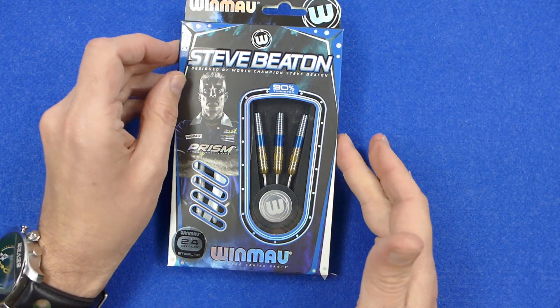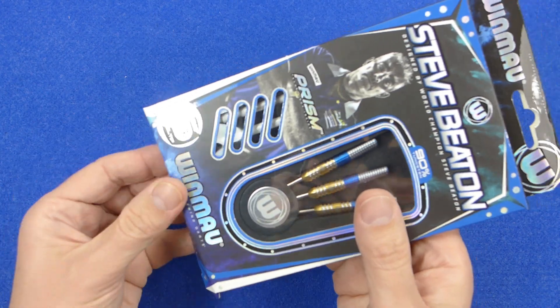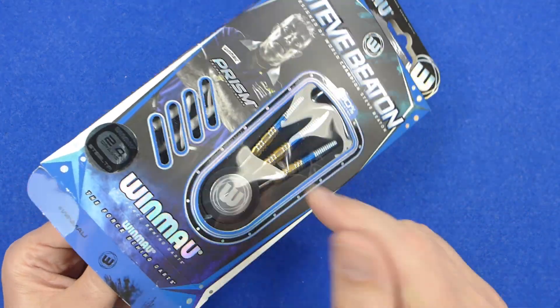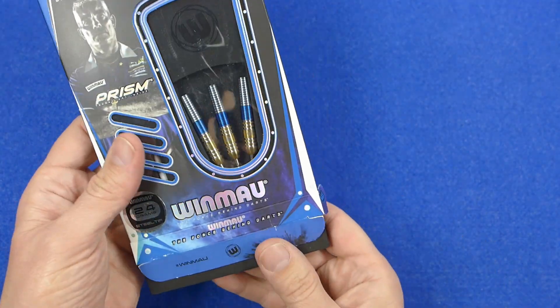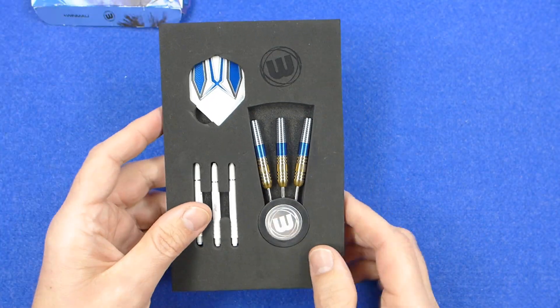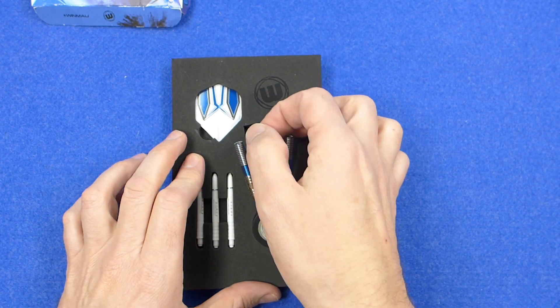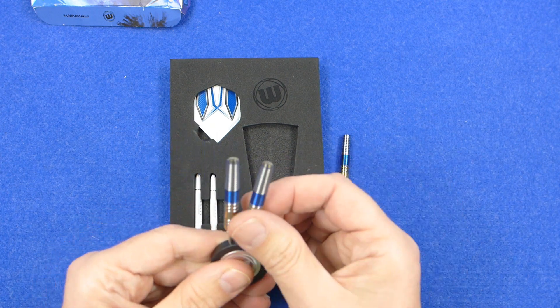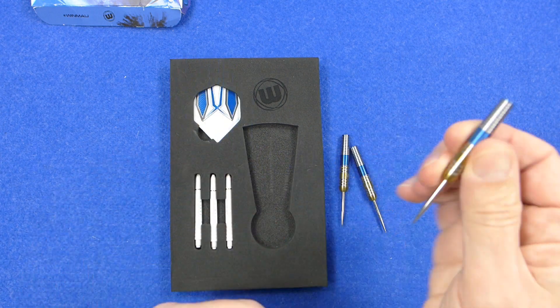So the darts come in the new Winmore packaging. It's just a slim cardboard box with a window showing the darts and then smaller windows where the stems are showing. Inside you've got a foam inset holding the contents and the darts are fitted into a circular point protector. It's aluminium and plastic.